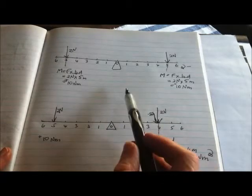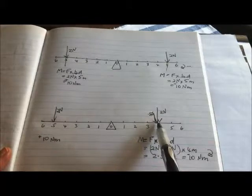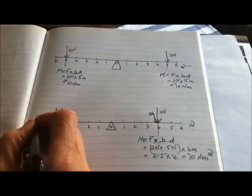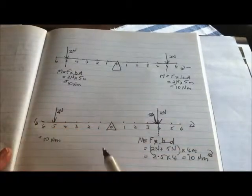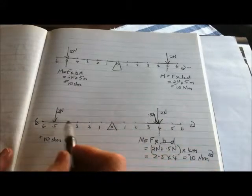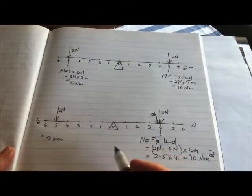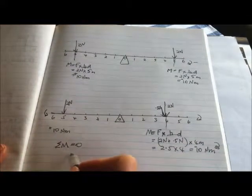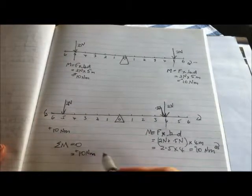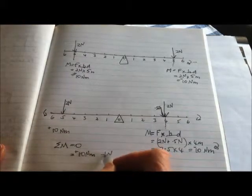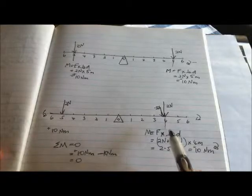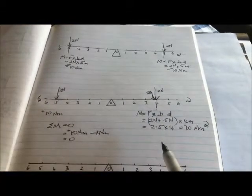When that person moves in and someone else hops on at 0.5 Newtons, together they create the same moment as the person on the other side, which we already know is plus 10 Newton meters. So the moment in the clockwise direction equals the moment in the counterclockwise direction, and the seesaw is balanced — the system is in equilibrium. In equilibrium, the sum of the moments is equal to zero: plus 10 Newton meters minus 10 Newton meters equals zero.